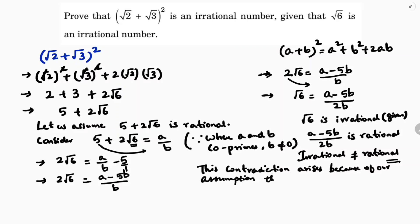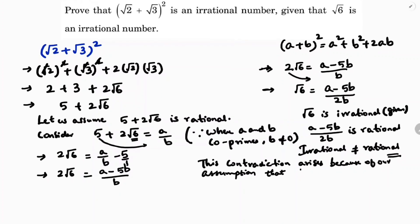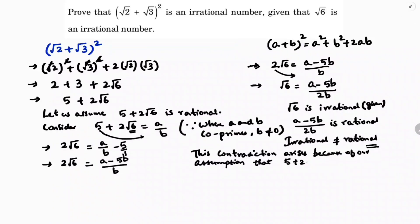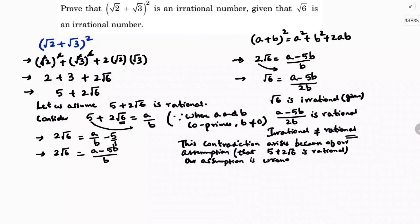Because of our assumption that 5 + 2√6 is rational, we arrived at a wrong statement. Therefore, our assumption is wrong, and we conclude that 5 + 2√6 is an irrational number.